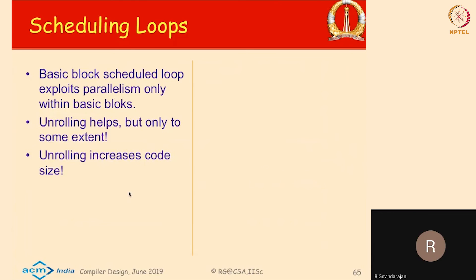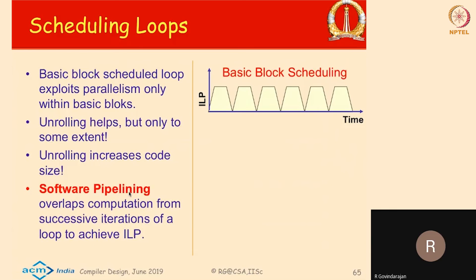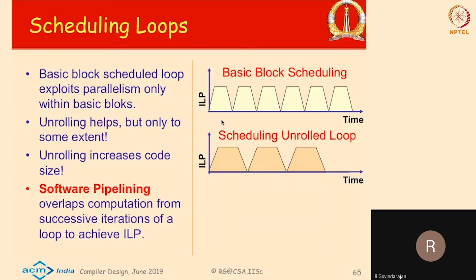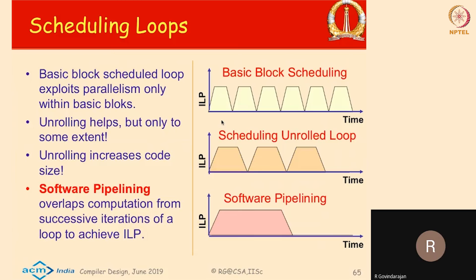Pictorially: with basic block scheduling, every iteration is limited by whatever instruction scheduling can be done within it. With unrolling and scheduling you improve somewhat. With software pipelining you get the best throughput. The ramp-up and ramp-down phases — the prolog and epilog — represent the time to build up enough instruction-level parallelism to keep functional units busy, and then the tapering down at the end. Without unrolling you incur this cost every loop; with some unrolling you incur it less often; with software pipelining you incur it exactly once at the beginning and once at the end.